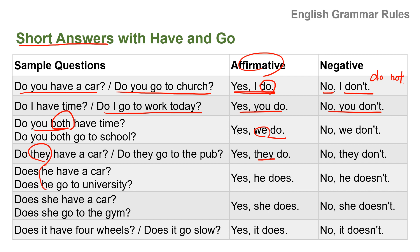Now third person singular — he: Does he have a car? Yes, he does. No, he doesn't. Does he go to university? Yes, he does. No, he doesn't. Does she have a car? Yes, she does. No, she doesn't. Does she go to the gym? Yes, she does. No, she doesn't. Does it have four wheels? Yes, it does. No, it doesn't. Does it go slow? Yes, it does. No, it doesn't. Okay friends, this is the conclusion of today's study. I will come back with another English grammar lesson soon. Until then, keep studying English and have a great day. Bye!